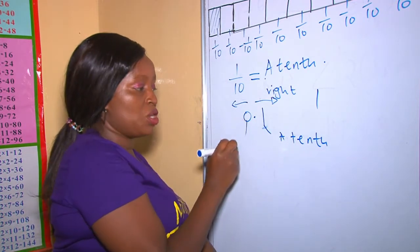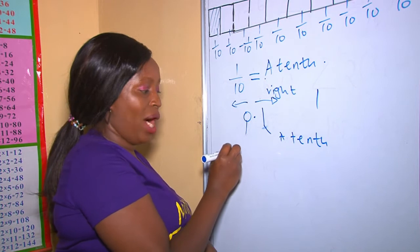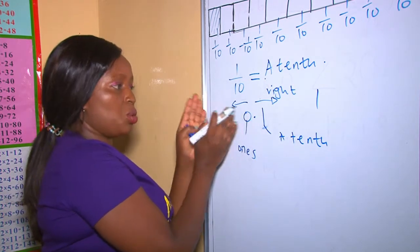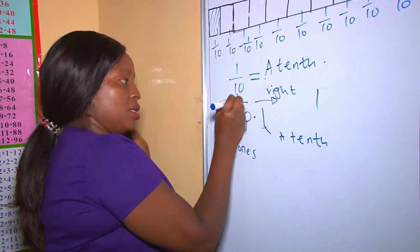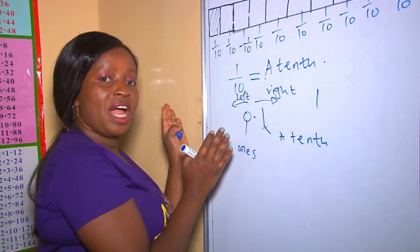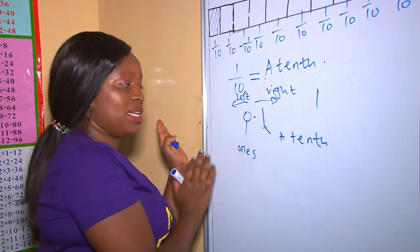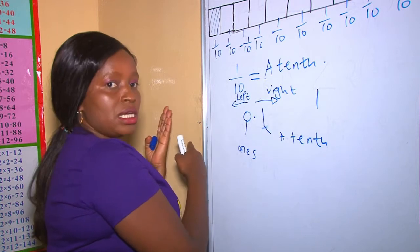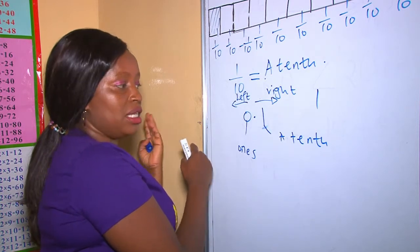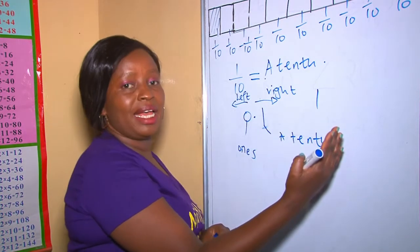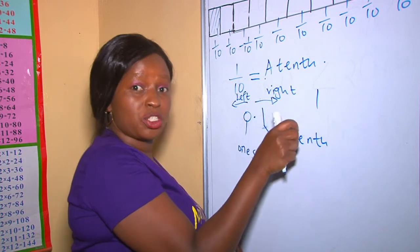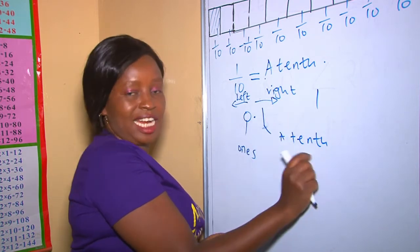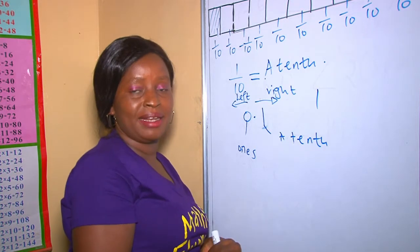And the place value of 0 here is 1s. Going to the left, we have the whole numbers like 1s, 10s, 100s, and 1,000. But going to the right of the decimal point, we have the fractions, or very small numbers, called tenths, which is 1 over 10.